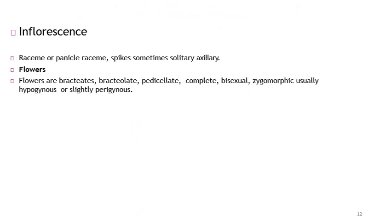Now we discuss the inflorescence of this family. The inflorescence has a main axis that develops lateral flowers and continues to grow indefinitely up to the last flower; such type of inflorescence is called racemose inflorescence. In some cases, the main axis is elongated and bears sessile flowers; that is called a spike. So the members of this family also possess inflorescence in the form of a spike.